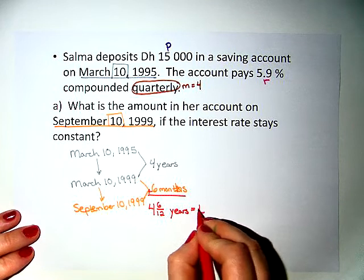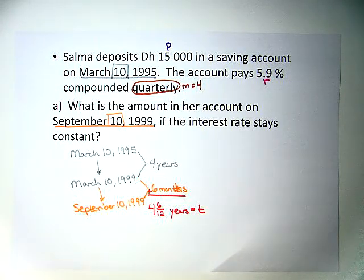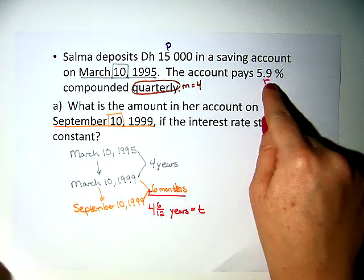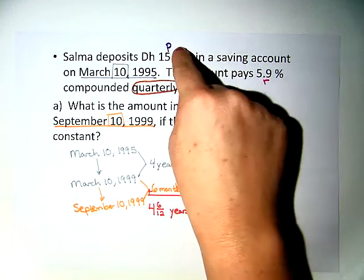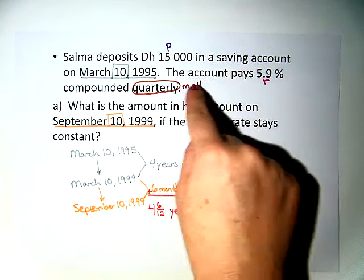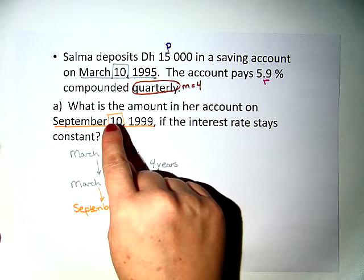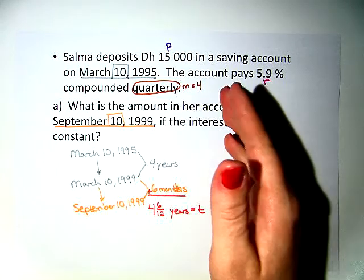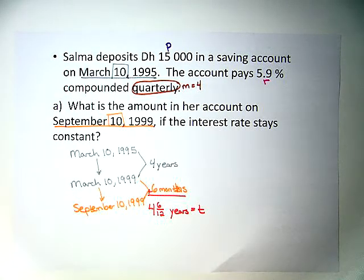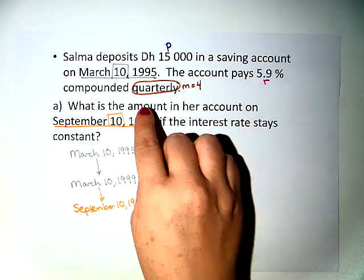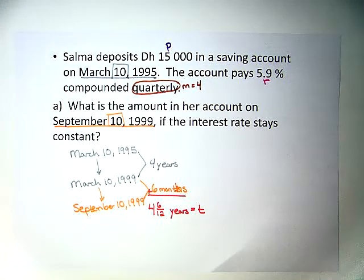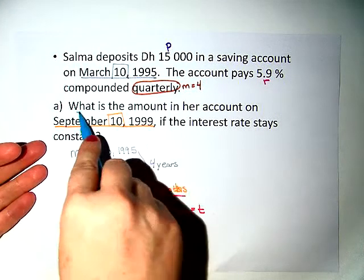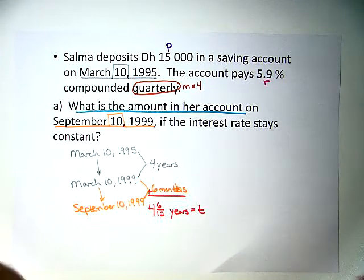So this is our T. We have R, we have P, we have M, and now all we need to do is find the amount in her account, which is the S amount — the maturity amount in the account.